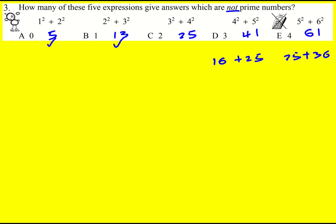5 and 13 are prime. 25 is not. It's a square number. It's 5 squared. 41 is prime and 61 is prime as well.